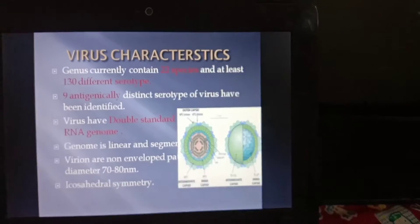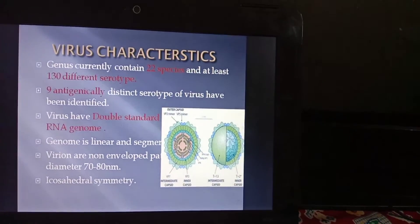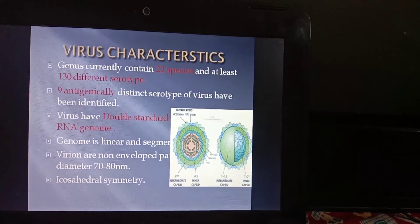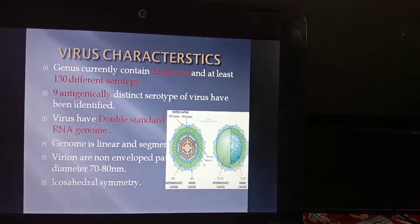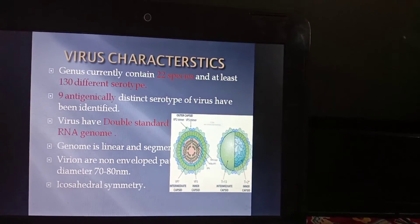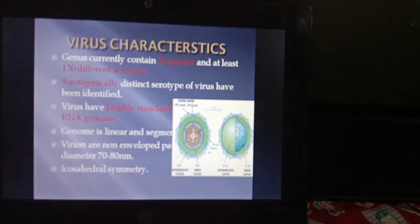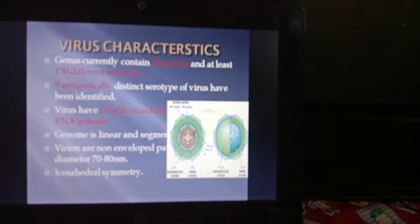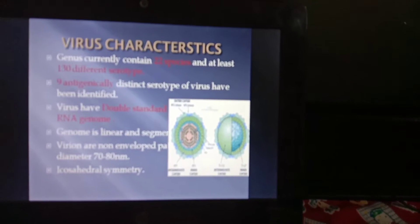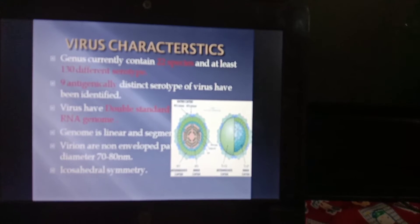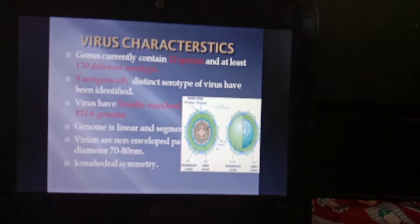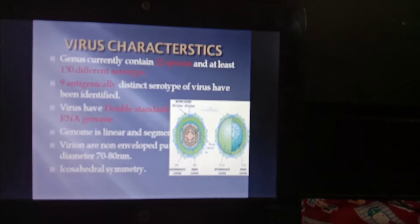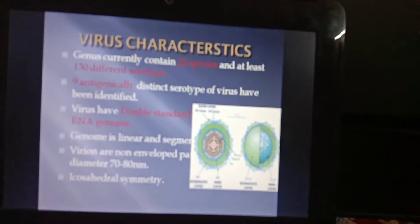Regarding viral characteristics, the genus currently contains 22 species but at least 130 different serotypes. There are nine antigenetically distinct serotypes of the virus that have been identified. The virus has a double-stranded RNA genome that is linear and segmented. The virions are non-enveloped and the virus has icosahedral symmetry.